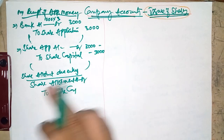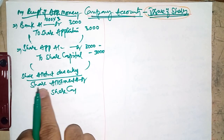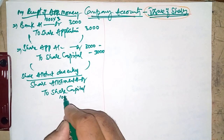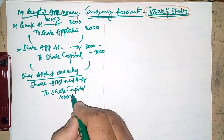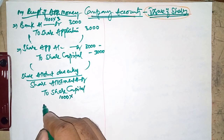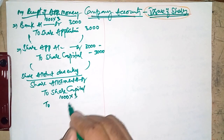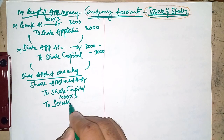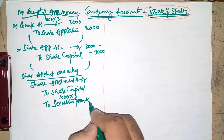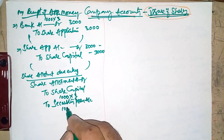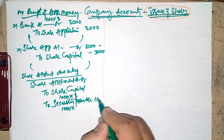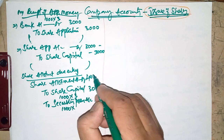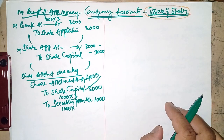Next, the share allotment due entry: Share Allotment Account Dr. to Share Capital and to Securities Premium Account. On 1000 shares we receive four rupees on allotment — three rupees towards capital and one rupee towards securities premium — so ₹1000 towards premium and ₹3000 towards capital, together ₹4000.